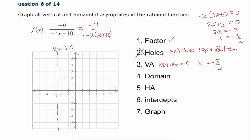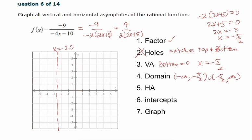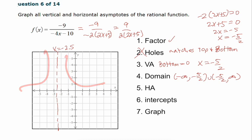The domain skips only x = -5/2, so it's (-∞, -5/2) ∪ (-5/2, ∞). Since both top and bottom share a negative factor, we can cancel those. For the horizontal asymptote: the bottom degree (1) is greater than the top degree (0), so by the rule — when the bottom degree is higher than the top degree — the horizontal asymptote is y = 0.